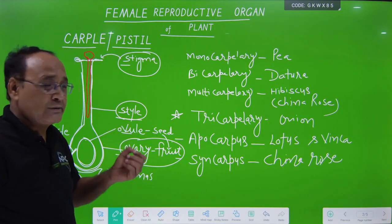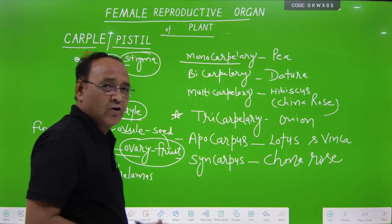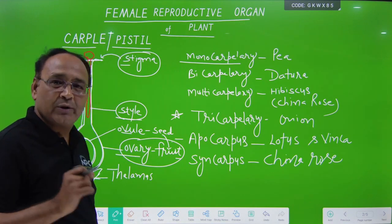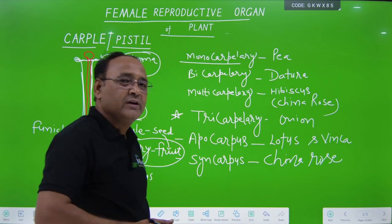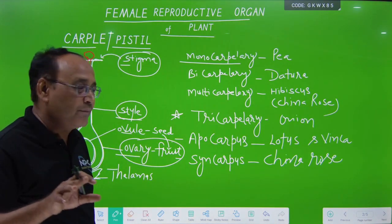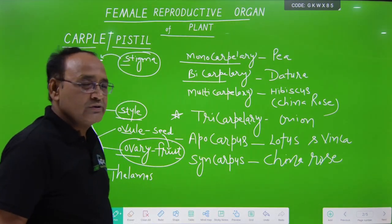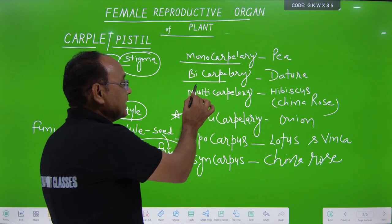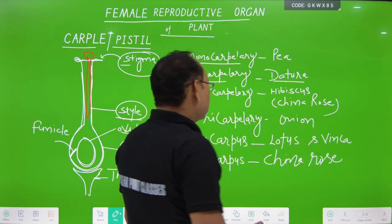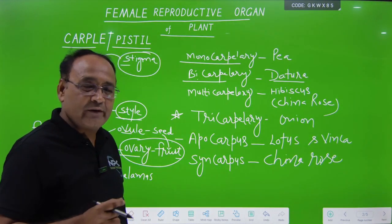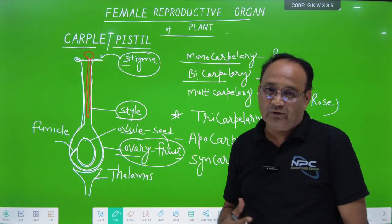In a flower, if a single carpal is present, such type of flower or ovary is known as monocarpillary, and it is generally found in pea — Pisum sativum, the garden pea. Second, if carpels are two, such condition is known as bicarpillary, and bicarpillary condition is found in Datura, which belongs to the Solanaceae family.